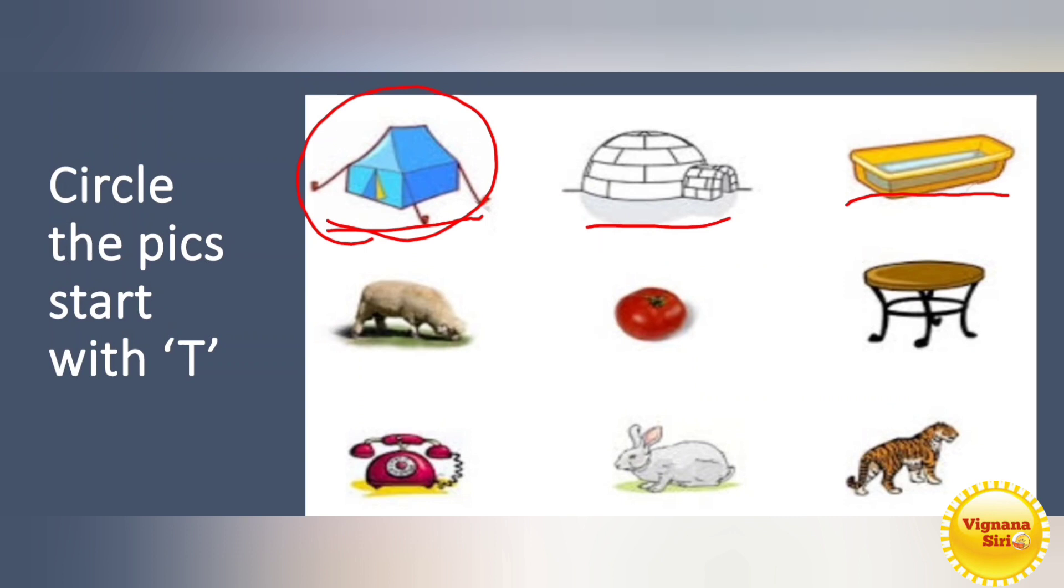What is this one? That is a tub, right? Yes. T for tub. What is this? This is rhinoceros. So it's with R. Tomato. So T for tomato. What is this one? This is table. T for table.